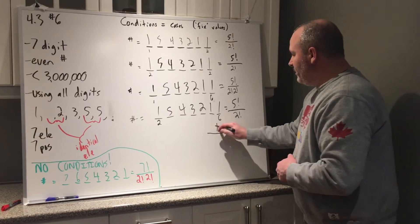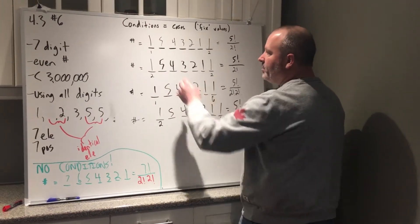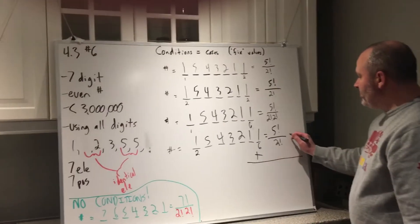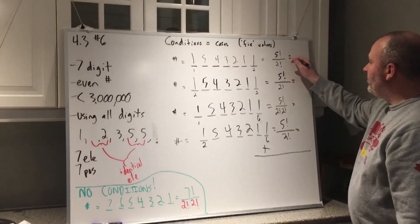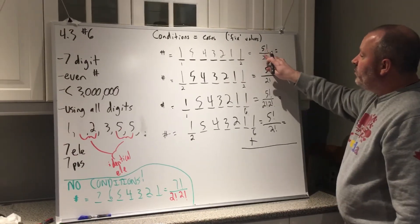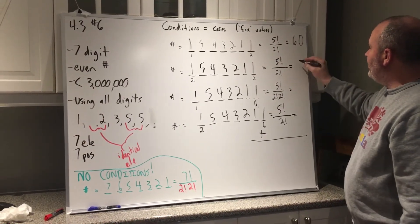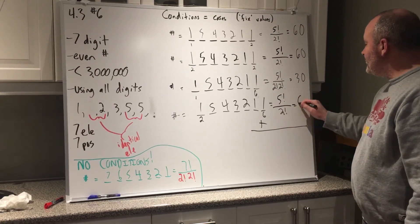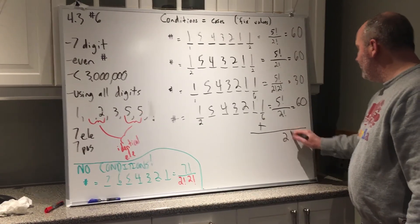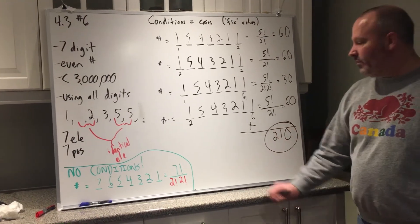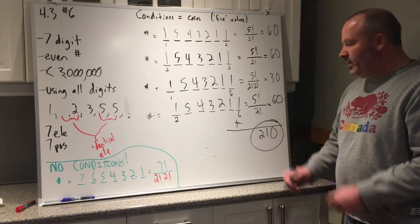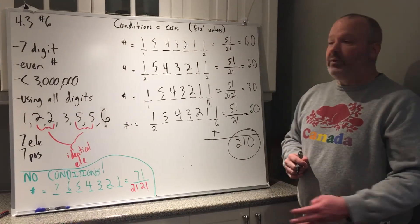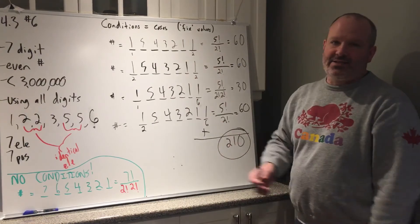Now to get my answer, it could be this one or this one or this one or this one. There's no other numbers that are less than 3 million because I can only have a 1 and a 2, and that are even, only having a 2 and a 6. So I take these numbers and add them all up. 5 factorial divided by 2 factorial: 120 divided by 2 is 60. 120 divided by 2 is 60. 120 divided by 2, then divided by 2 again, is 30. And then 120 divided by 2 is 60. Giving us a total of 210 different ways. Therefore, there are 210 numbers using these numbers that could create even numbers that are seven digits less than 3 million.